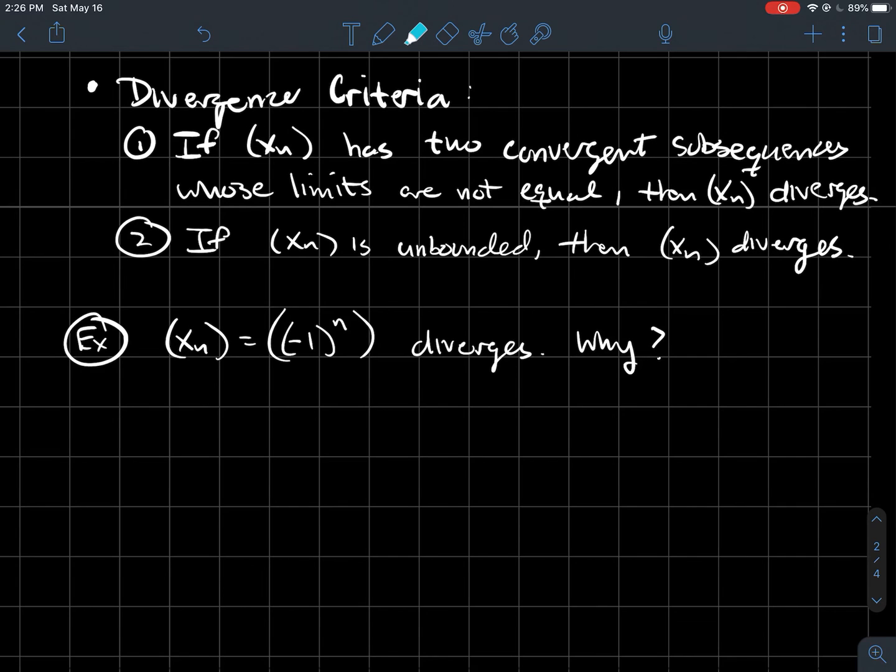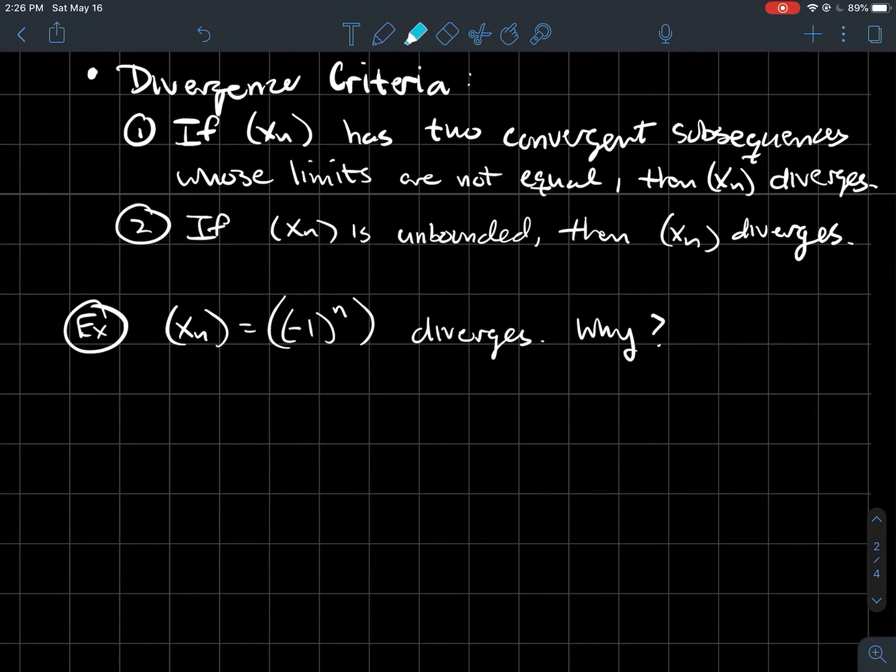So if I look back just to demonstrate maybe number 1 here, look at this sequence that consists of minus 1 raised to the nth power. This thing diverges. How come? So what I'm going to do is show you, number 1, can I exhibit two subsequences who have different limits? And so sure,